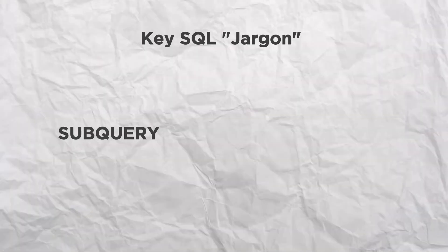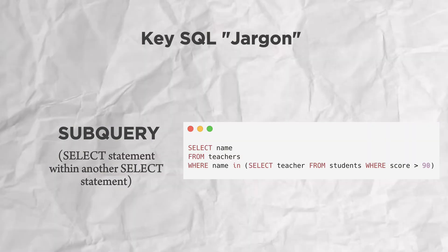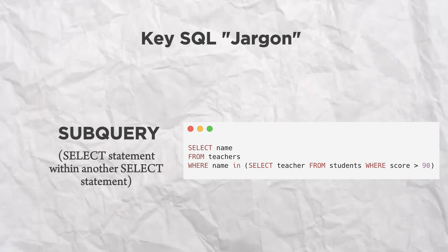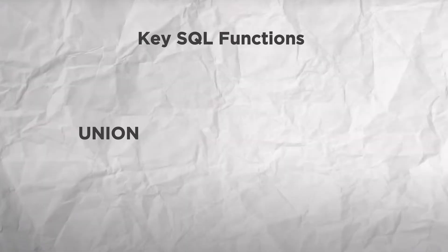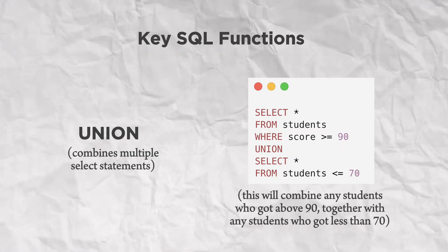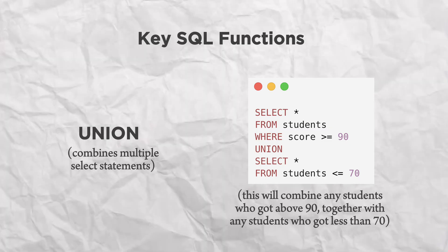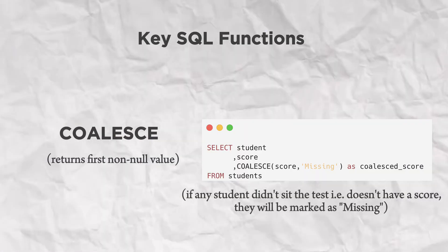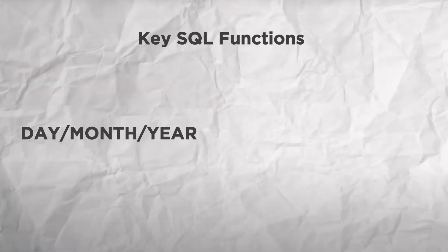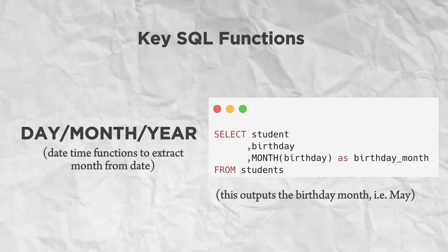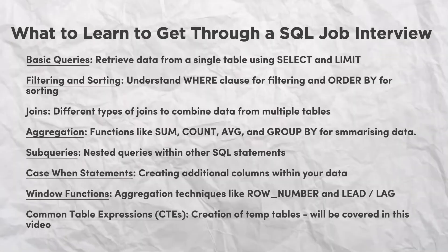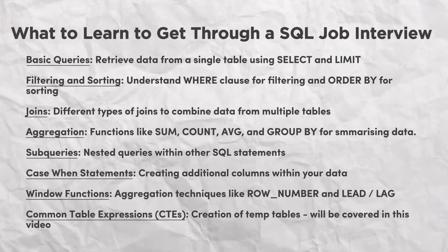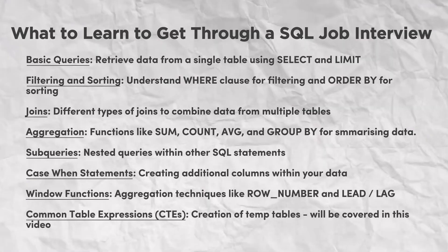Moving on, we also have subquery, which is basically a query within another query — really good for one-off calculations, but not so good in complex queries. UNION combines results from two or more SELECT queries into a single result set. We've also got the COALESCE operator, which returns the first non-null value in a list of columns. And lastly, I often use date functions to help you extract parts of a date or to calculate time intervals. Feel free to take a screenshot right now. There is no need to memorize all these SQL functions — I do a lot of Googling, and this definitely comes over time and experience.